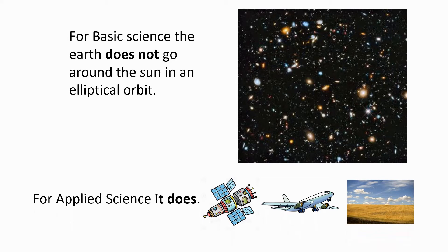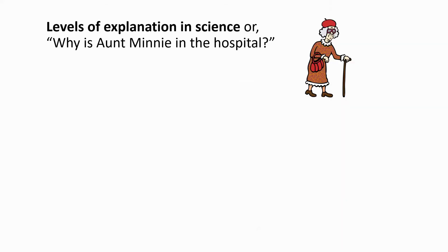There are all kinds of actions we can take — launch satellites, fly airplanes, and predict the onset of seasons — based on the assumption of a simple elliptical orbit. In other words, for basic science the hypothesis of an elliptical orbit has been falsified, whereas for applied science it hasn't. Another way of making a similar point is to look at what I'm calling 'why is Aunt Minnie in the hospital,' after an anecdote I took from Richard Feynman.